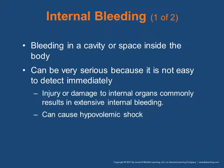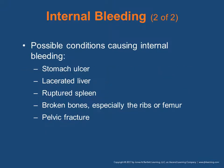Internal bleeding in a cavity or space inside the body can occur without being seen. It can be very serious because it is not easy to detect immediately. Injury or damage to internal organs commonly results in extensive internal bleeding and can cause hypovolemic shock. Possible conditions causing internal bleeding include a stomach ulcer or GI bleed, a lacerated liver, a ruptured spleen, broken bones especially the ribs or femur, and a pelvic fracture.